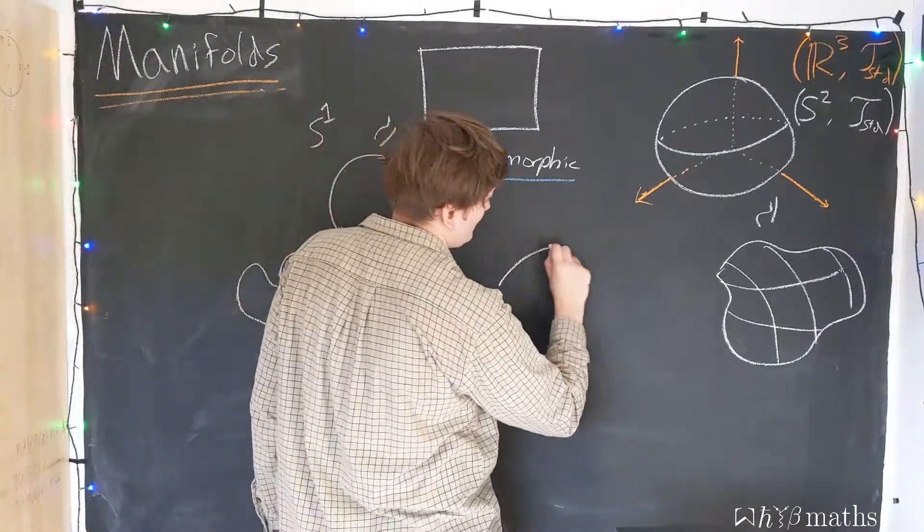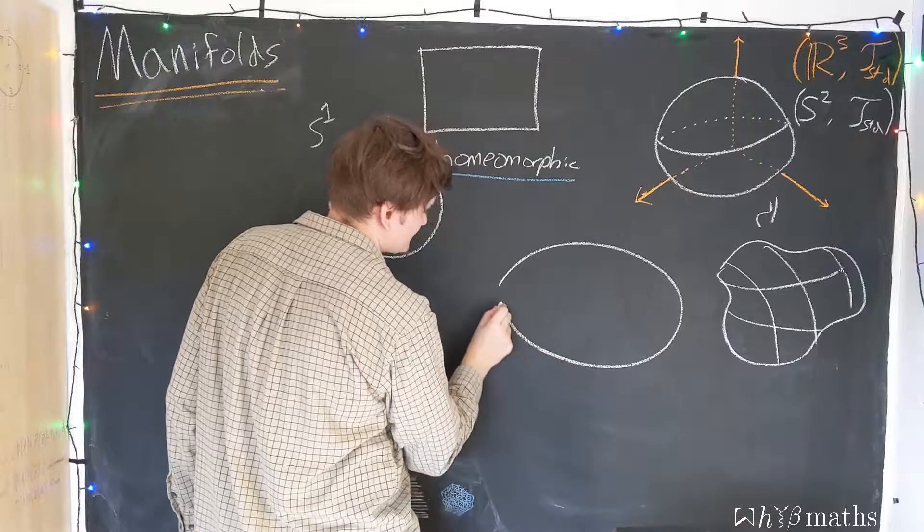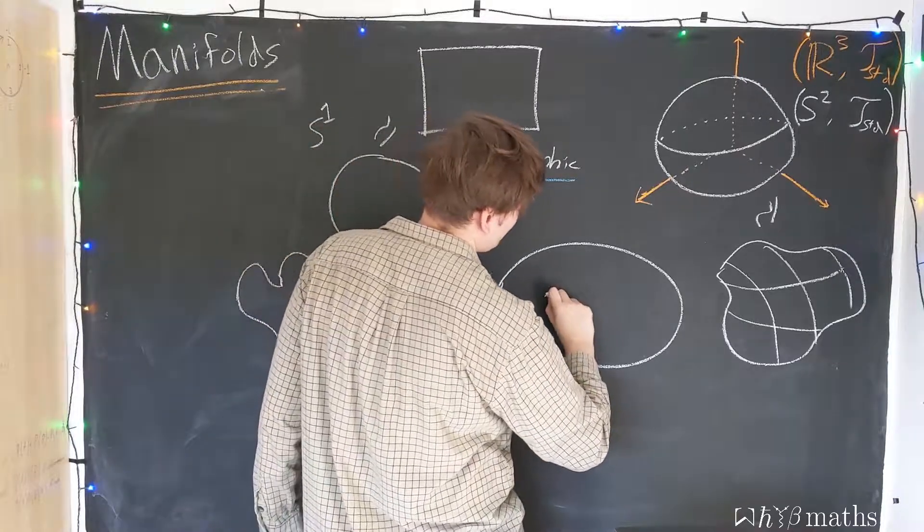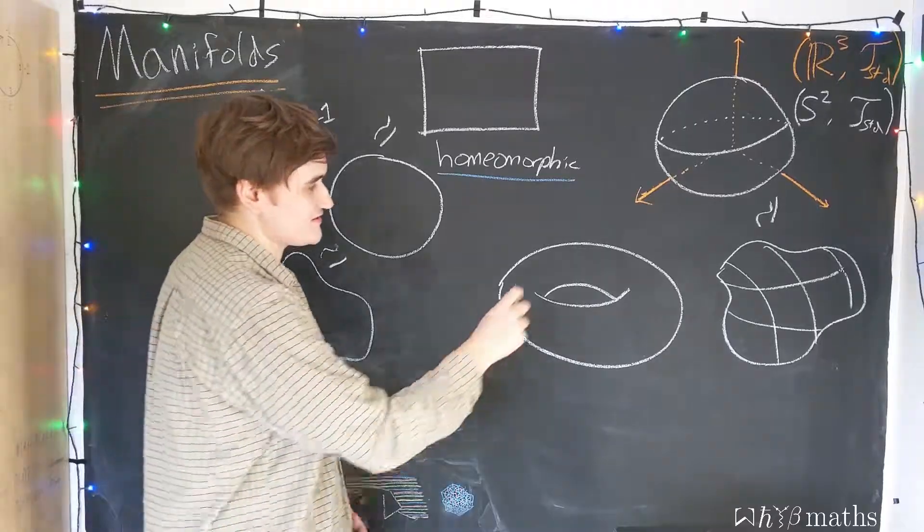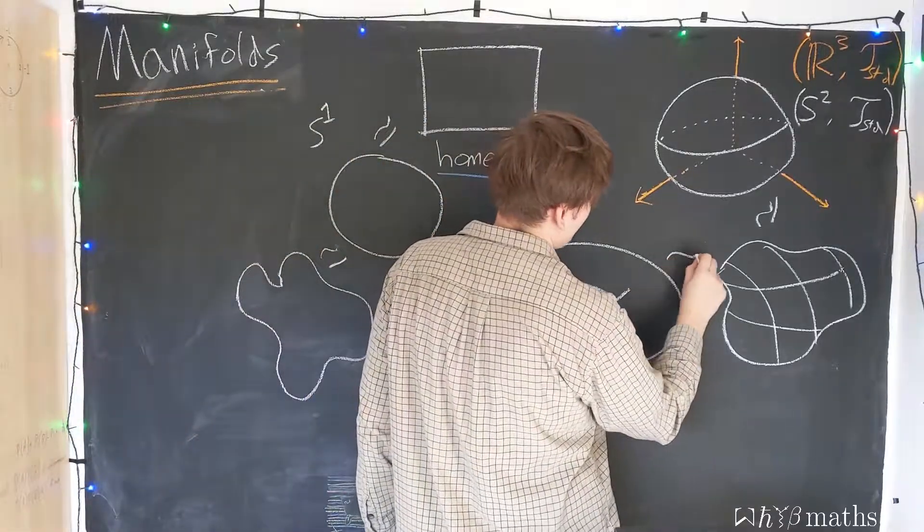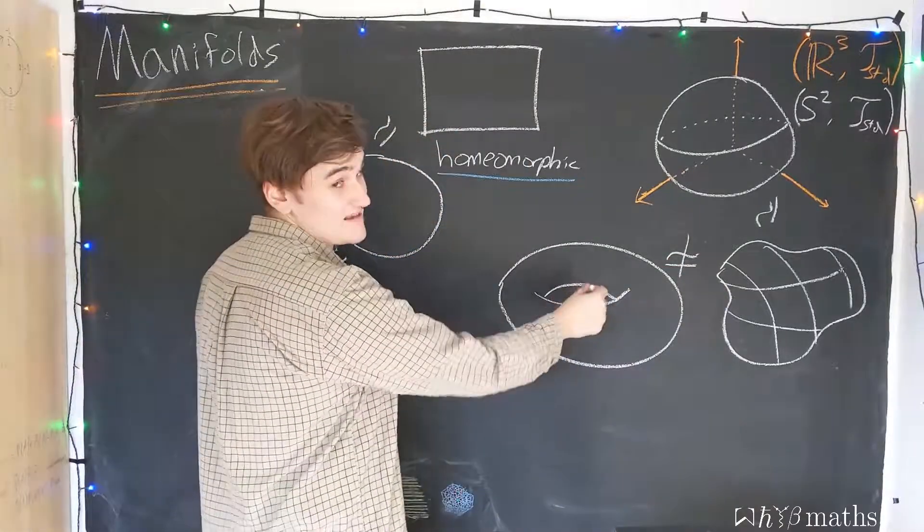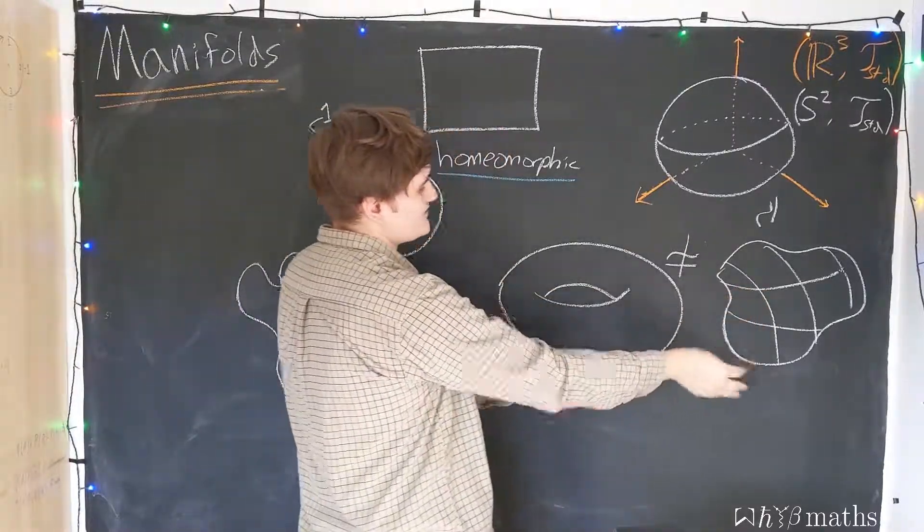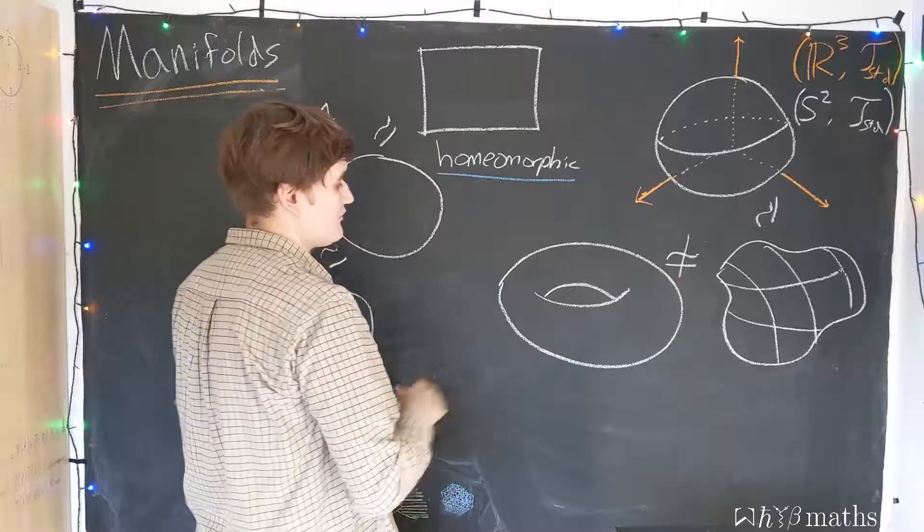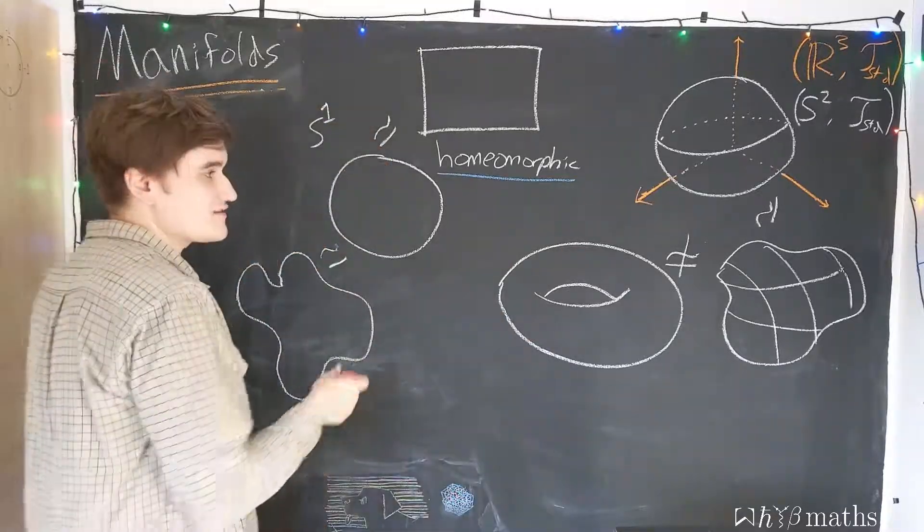However, we could have another type of topological space, called the torus. This is not homeomorphic to the sphere, because it has a hole. There's no way we can continuously deform this space into here. We would have to punch a hole in it.